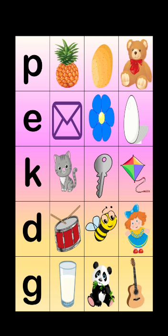Look - in this picture we are having letters and objects. What we have to do is point out the odd one. Look at the first letter - what is the first letter? Letter P.